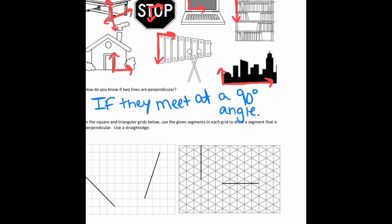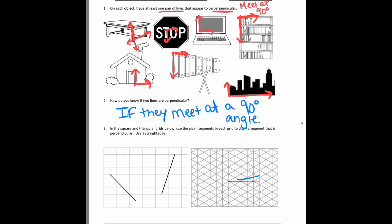Number three. This is a little difficult, but what it says is that in the square and triangular grids below, use the given segments in each grid to draw a segment that is perpendicular using a straight edge. So what I'm going to do is I'm going to show you how I did it on my iPad. It's a little bit hard to see, but if you use a ruler, you can turn it to a 90 degree angle to the segment that's already there, and you could trace along it. So I did that one here, and here as best as I could. And you can also use your right angle template to make sure it's right. And then over here, with the one on the triangular grid, I did the same thing. Just making sure that I make a right angle to show that it's perpendicular.